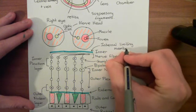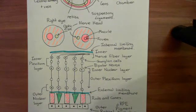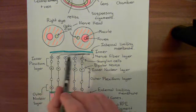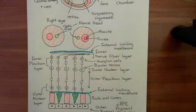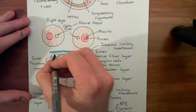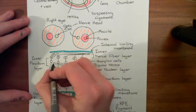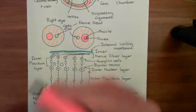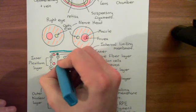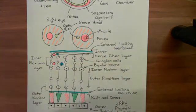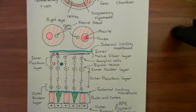We now need to discuss where the arterioles and venules are within the retina. Arterioles and venules are present in both the nerve fibre layer just underneath the internal limiting membrane and in the inner plexiform layer, so they're towards the inner aspect of the retina overall. The microvasculature within the retina is going to be very important in diabetic retinopathy, and we'll discuss its structure in the next video.